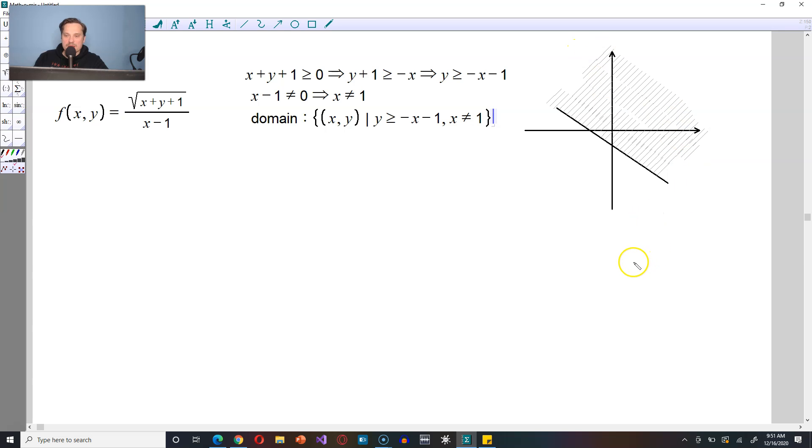And one more thing that you have to indicate is that x does not equal 1. So you might do that by drawing a vertical line this way. And because those values on x equals 1 are to be excluded, we can dash the line. So this line here is x equals positive 1 excluded from the domain.